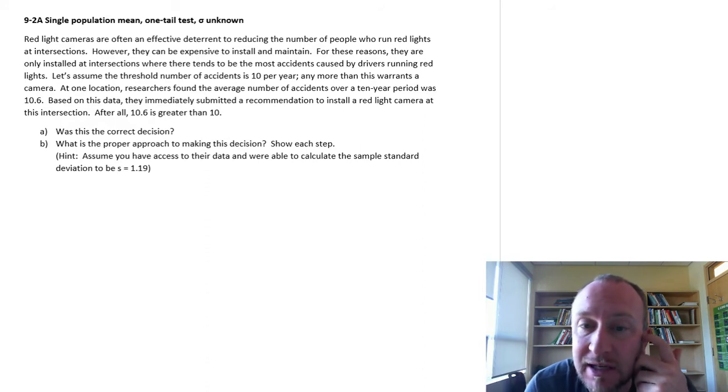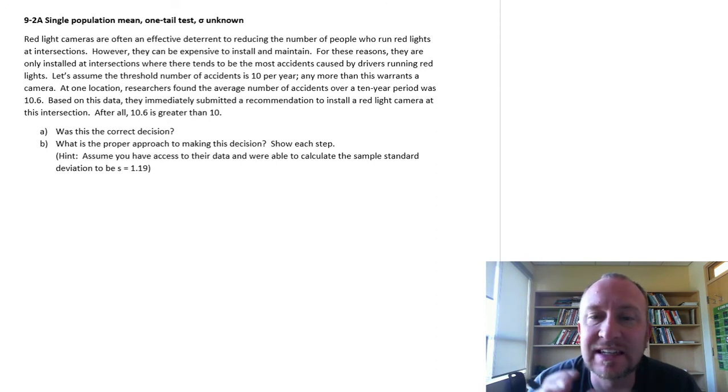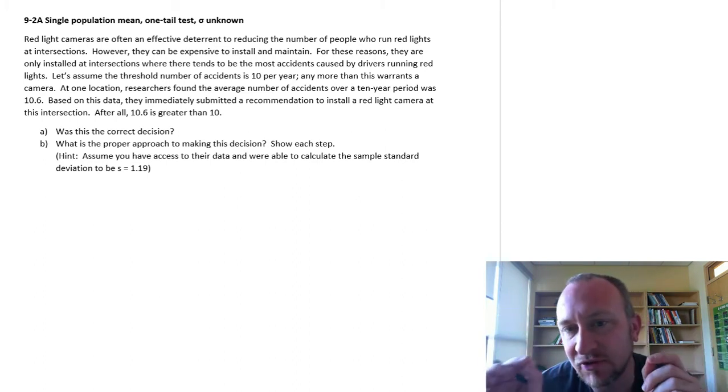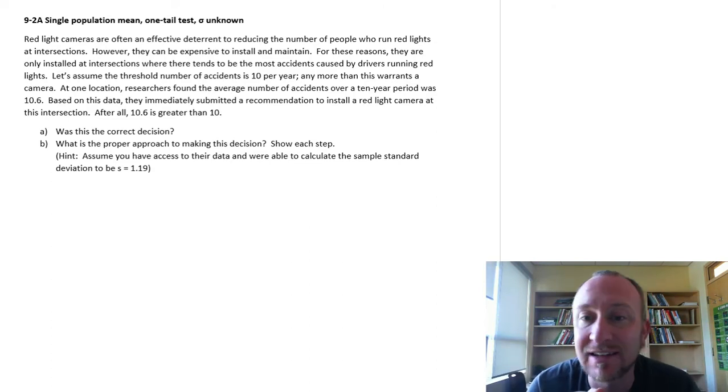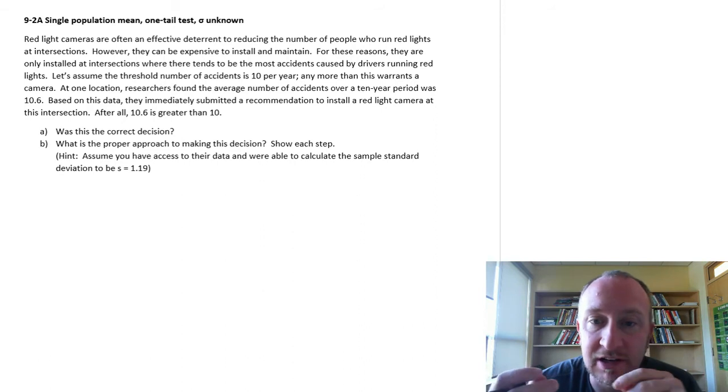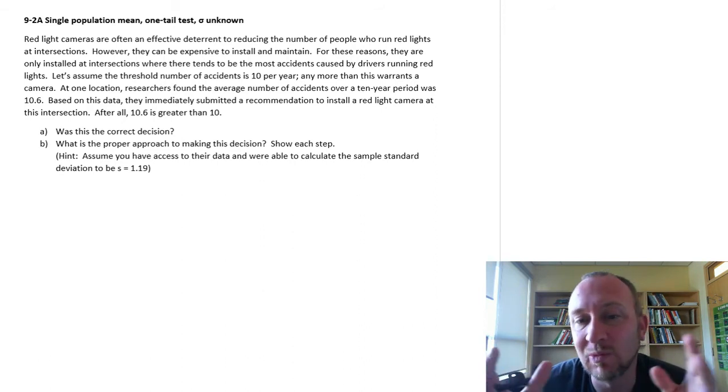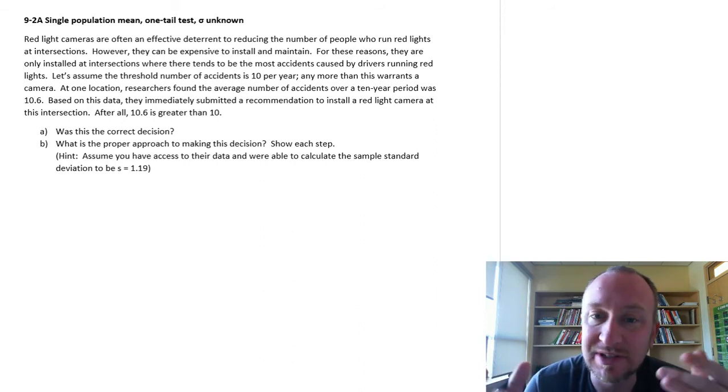So now we're going to be estimating the population standard deviation with the sample standard deviation. You'll see that very much of this type of exercise is the same as all of the other ones that we've done before. There's just that one little difference that now we're going to be using the t-distribution instead of the z-distribution. And so there's one more little piece of information that's required, and that is what variant of the t-distribution do we need?